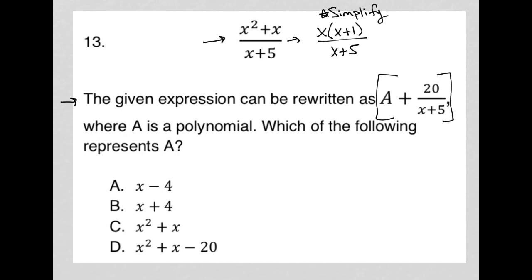Whatever the correct answer here represents an A value. I know that A plus 20 over x plus 5 must be equal to—now I'm going to use my simplified version—must be equal to x times x plus 1 over x plus 5.